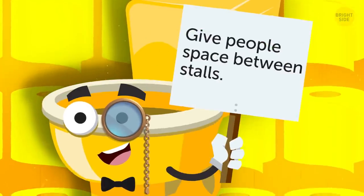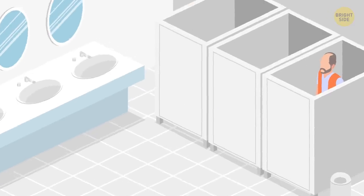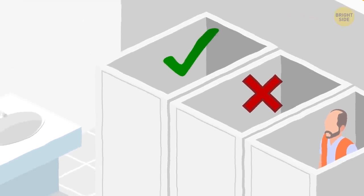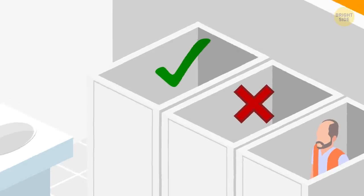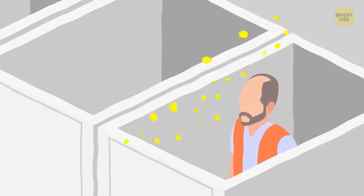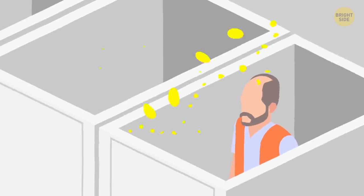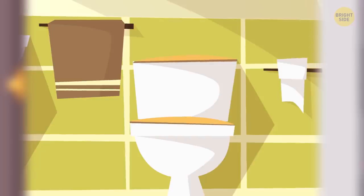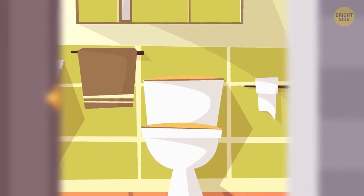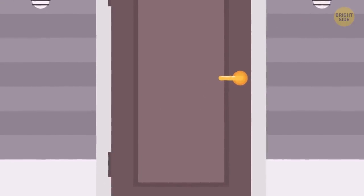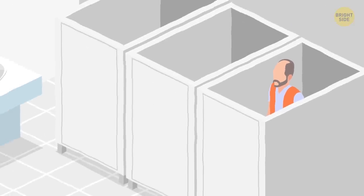Give people space between stalls. Whenever possible, don't pick the stall right next to somebody. Put a stall or two between you if the restroom isn't crowded. It's just weird and uncomfortable to hear someone else doing their most private business, and they don't want to hear you either. Keep in mind that in our own houses, our bathrooms are likely the most private room, complete with a lock, where we can enjoy our privacy. Not so much in public restrooms, so give people some space.